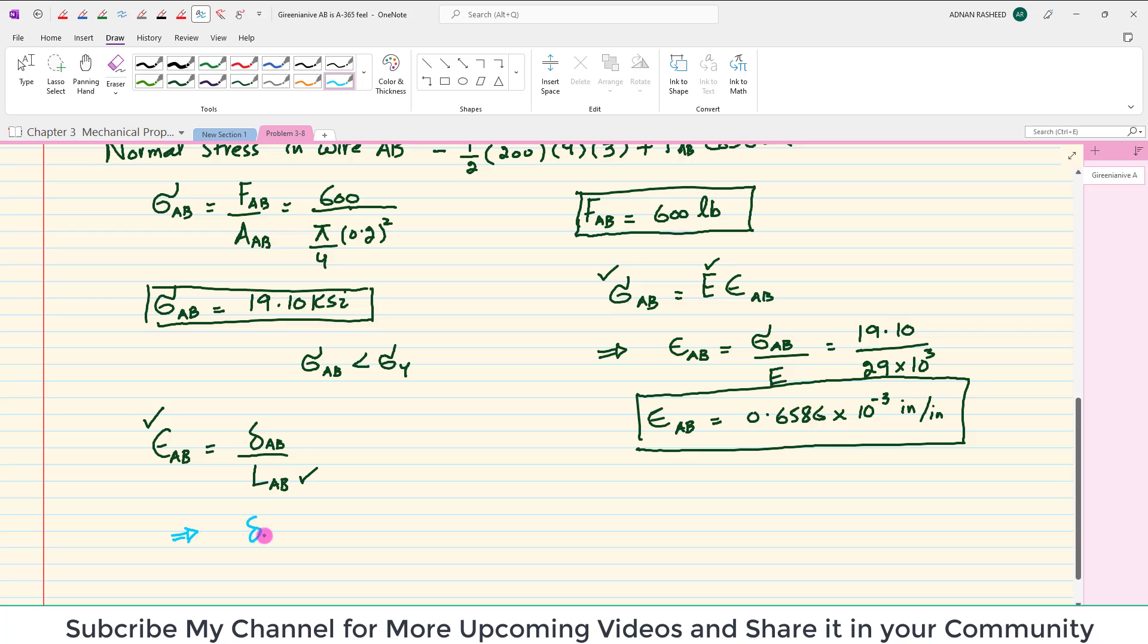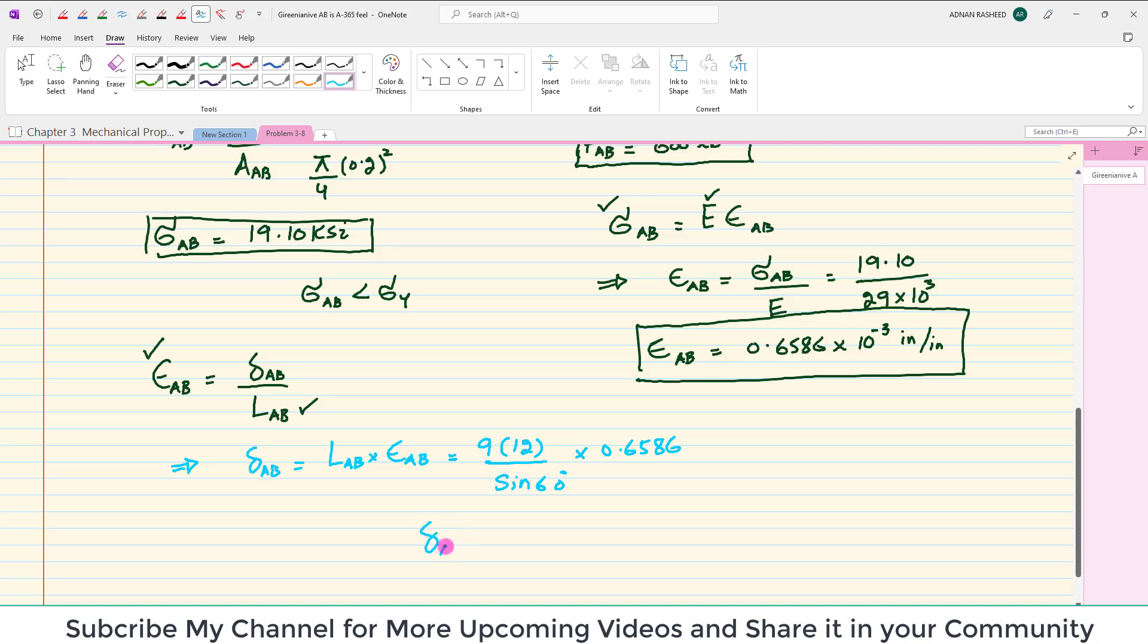From here, change in length or elongation is equal to length of AB into strain of AB. Length of AB is equal to 9 into 12 divided by sine of 60 multiplied by strain which is equal to 0.6586. When you solve this, you will get elongation in wire AB when distributed load acts, and that comes out to be 0.0821 inch.